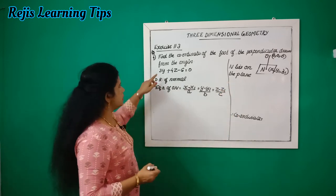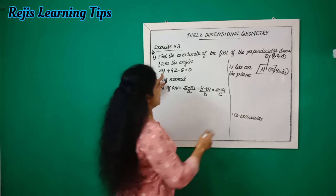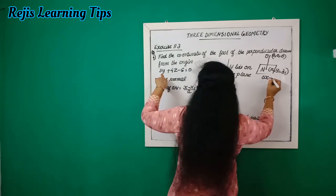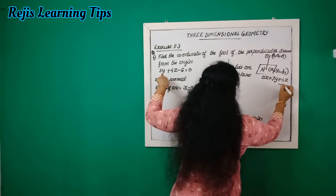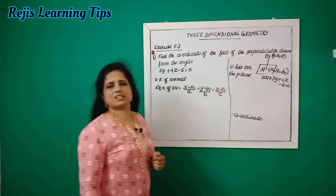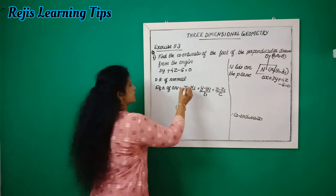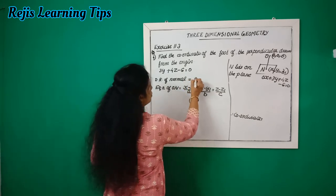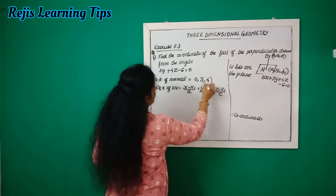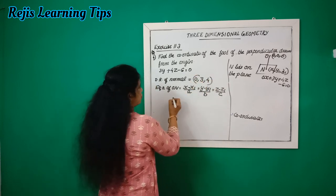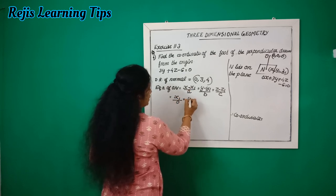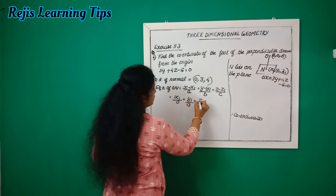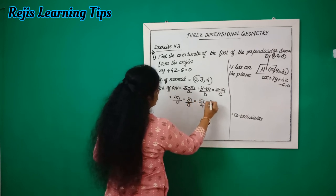Now the next problem. The plane equation is 0x plus 3y plus 4z minus 6 equals 0. The directional ratios of the normal are 0, 3, 4. We write the equation of line ON: x1 by 0 equals y1 by 3 equals z1 by 4 equals k.